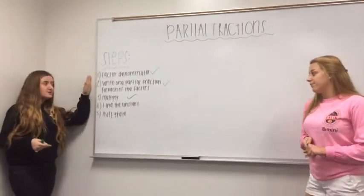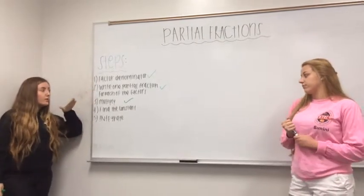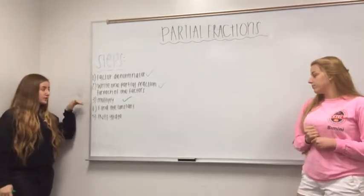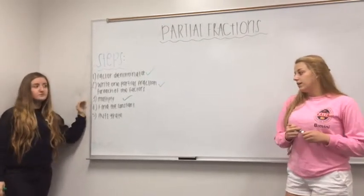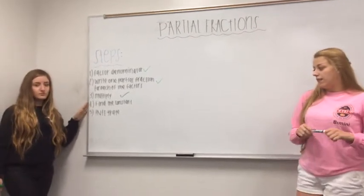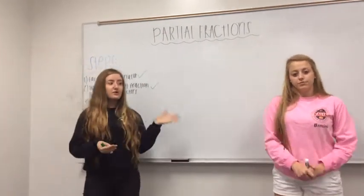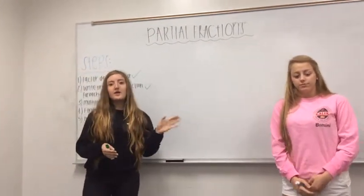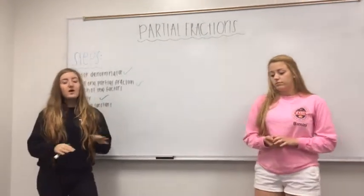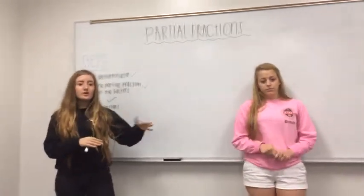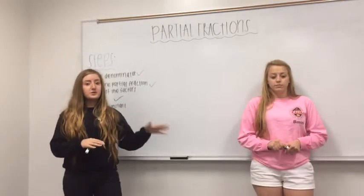The first step is to factor the denominator. The second step is to write one partial fraction for each of the factors. The third step is to multiply. The fourth step, find the constant. And the fifth and final step is to integrate. Zoe will now start off with the first problem. The first problem will be a basic introductory problem, and then the problems will become progressively more difficult as the video goes on.